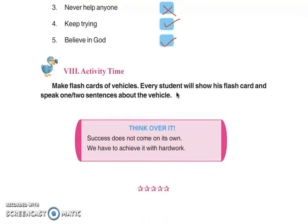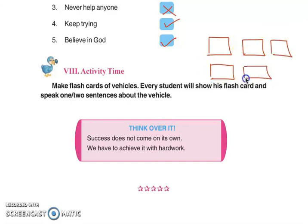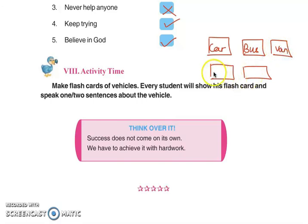Activity time — gatividhi da sama. Make flashcards of vehicles — sheet te vahanan de naam likhne ne. Every student will show his flashcard and speak one or two sentences about the vehicle — har vidyarthi apna card dikhayega, je kisne car likhya hai, bus likhya hai, aeroplane likhya hai, van likhya hai, rail likhya hai, ode baare ik do vak bolega.